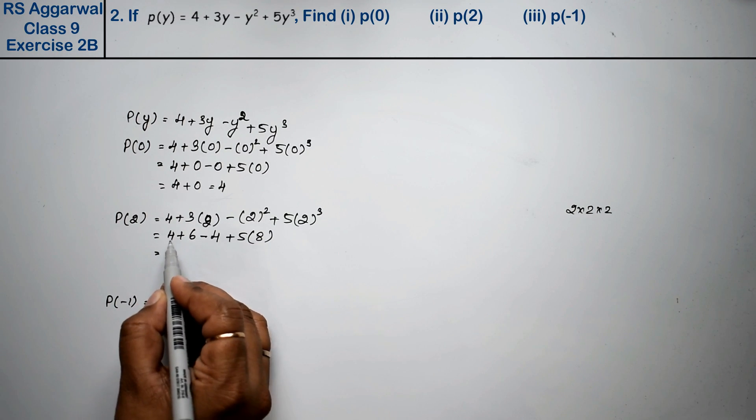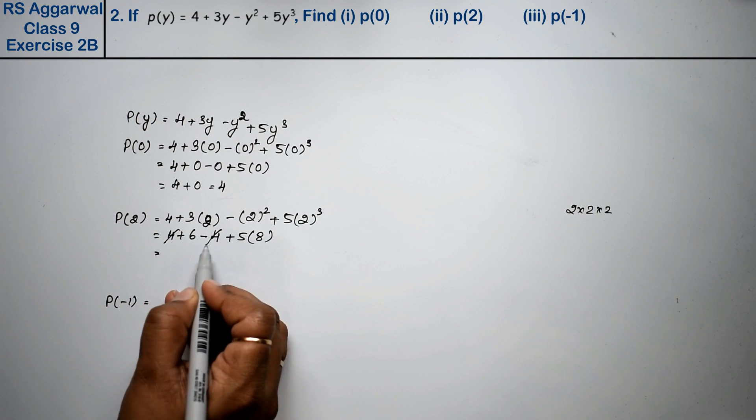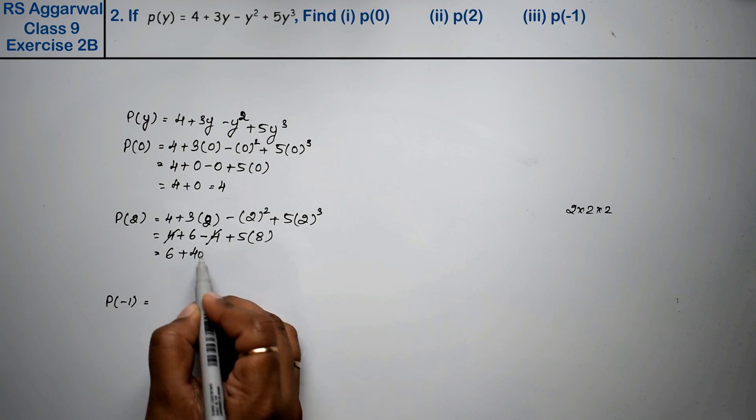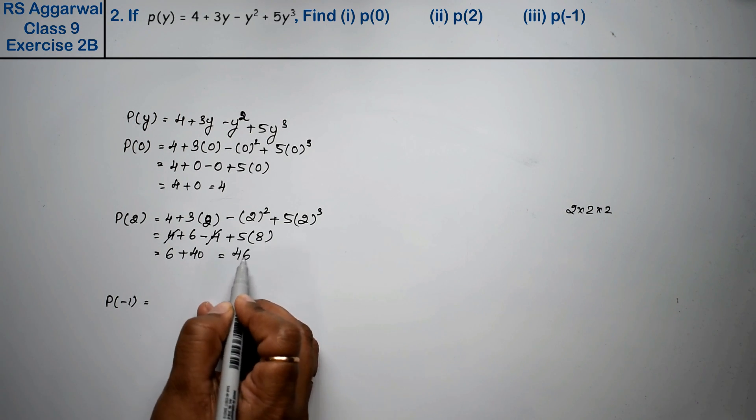Now 4 minus 4 cancel. So 6 plus 5 into 8 is 40. So 6 plus 40 equals 46. That's the answer.